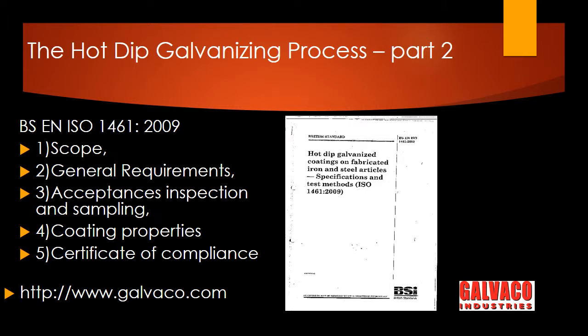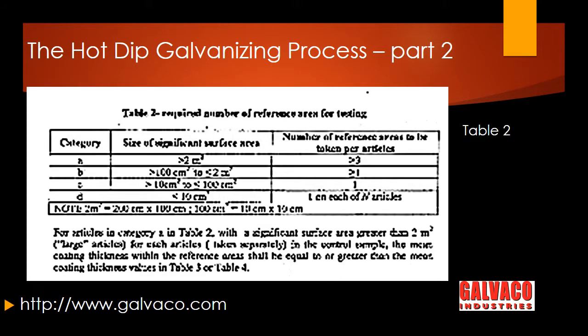Within the BSEN ISO 1461 are five main topics: namely scope, general requirements, acceptance inspection and sampling, coating properties, and certificate of compliance.